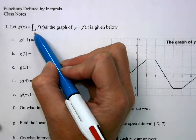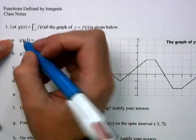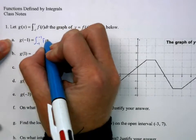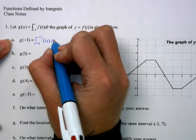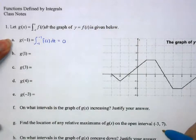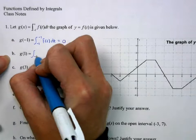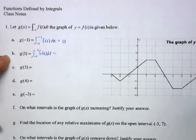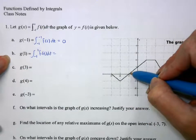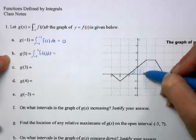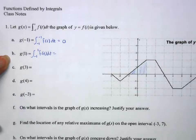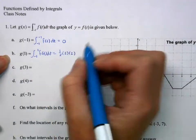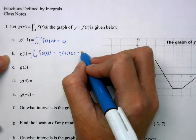Our g of x is the integral from negative 1 to x of f of t. To evaluate g of negative 1, that's the integral from negative 1 to negative 1 of f of t. We don't even have to look at the graph to know that's going to be 0. For g of 1, here's negative 1 and here's 1, so we want that area. That's just the area of a triangle: one half times 2 times 2, which is 2.